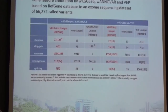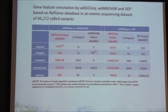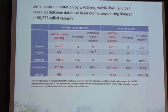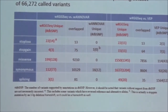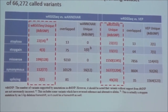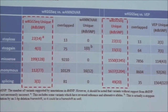We did a series of comparisons between WKTG-seq and two popular tools, Annovar and VEP. As for the very basic gene-feature annotation, you can see WKTG-seq can always annotate more important sequence variants in the exonic regions.